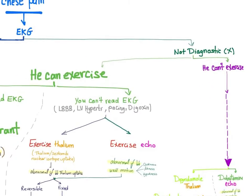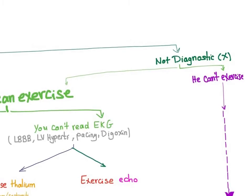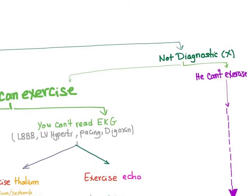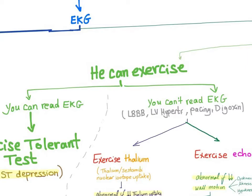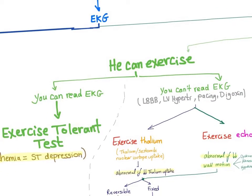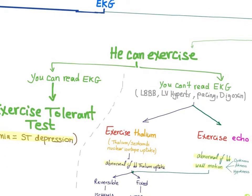Now what should we do? Either the patient cannot exercise or can exercise. If the patient can exercise, we have two separate scenarios: first, you may be able to read the EKG in most patients, or you cannot read the EKG.